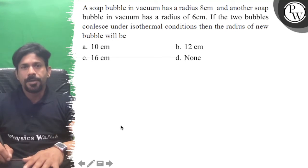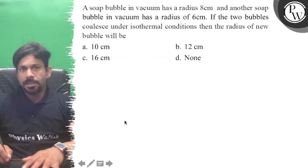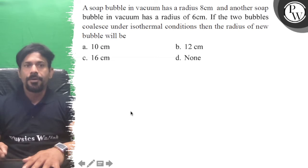Hello, let's see the question: A soap bubble in vacuum has a radius 8 centimeter and another soap bubble in vacuum has a radius of 6. If the two bubbles coalesce under isothermal condition, then the radius of new bubble will be.